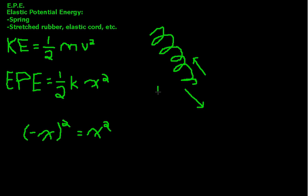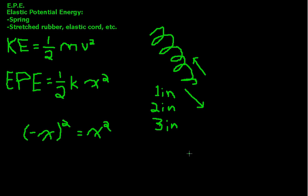If you pull it one inch, it takes some amount of energy. If you pull it two inches, then X becomes 2X, and 2X squared is 4X squared. So if you pull it two inches, you're doing four times as much work. If you pull it three inches, you're doing nine times as much work. That's why the farther you pull it, the harder and harder it gets to keep pulling.